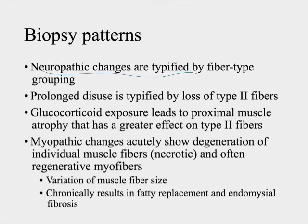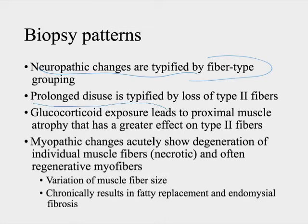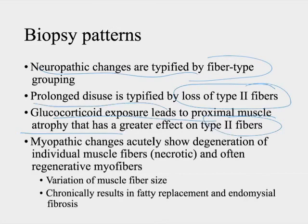Looking at biopsy patterns: neuropathic changes are typified by fiber-type grouping. If one axon dies away and denervates a muscle fiber, it gets re-innervated by a nearby motor unit, and since fiber type is dictated by the innervating neuron, you end up with muscle fiber-type grouping. With prolonged disuse — like laying in a hospital bed for weeks — or glucocorticoid exposure, you get a preferential loss of type 2 fibers, with the greatest atrophy occurring in proximal muscles.